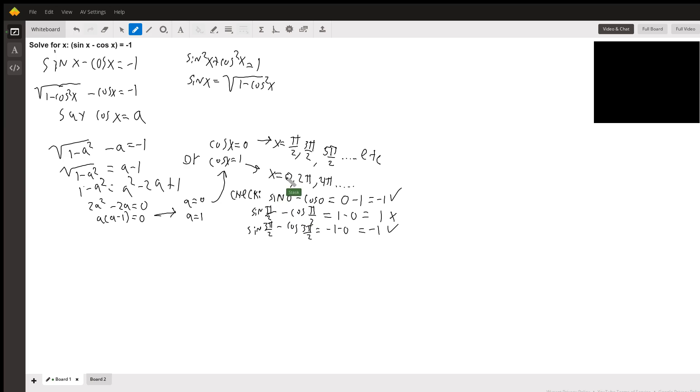Because we introduced the square root, we need to check for extraneous solutions. If we plug in x equals zero to the original equation, we have sine zero minus cosine zero, which is zero minus one, which checks out. If we plug in pi over two, we get sine pi over two minus cosine pi over two, which is one minus zero, which is positive one.